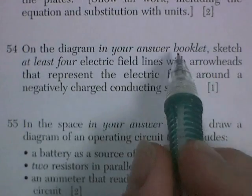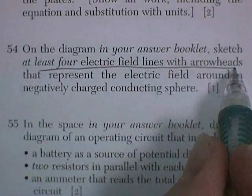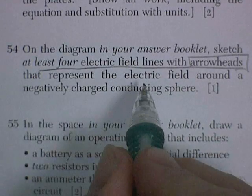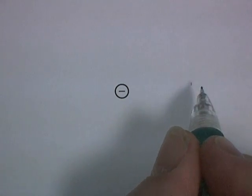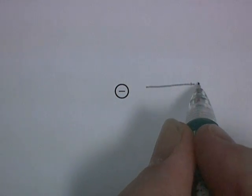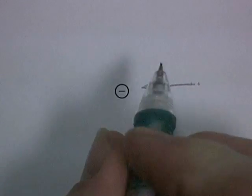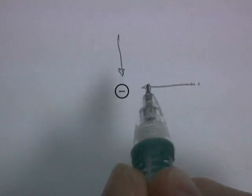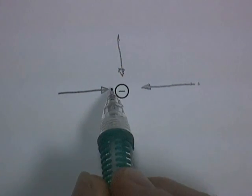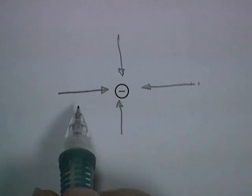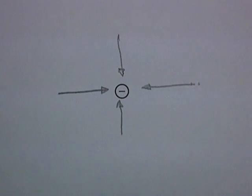Question 54. On the diagram in your answer booklet, sketch at least 4 electric field lines with arrowheads that represent the electric field around a negatively charged conducting sphere. Here's a space. There's our negative sphere. Now electric field lines are drawn using a positive charge. So if I put a little positive here, it would be attracted to the negative. And they want how many? Four. At least four. So if I had a negative sphere here, the positives would be attracted towards it. If this was a magnet, we would use a north pole as our test charge. But it's electric, so we use a positive.